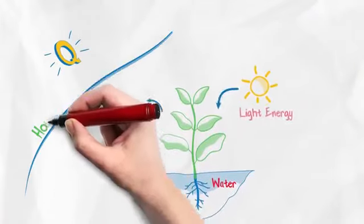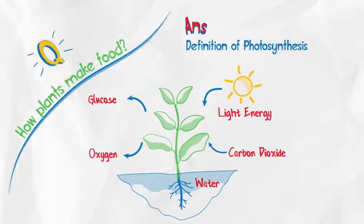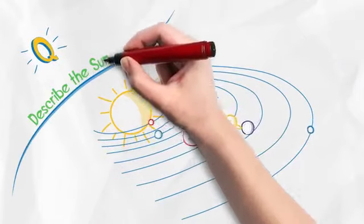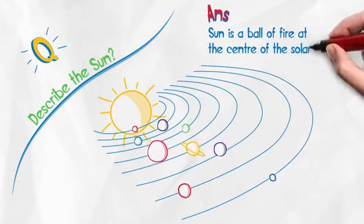Instead of asking children how plants make food, the science teacher gives you the definition of photosynthesis. Instead of asking them to describe the sun, the teacher tells them that the sun is a ball of fire at the center of the solar system.